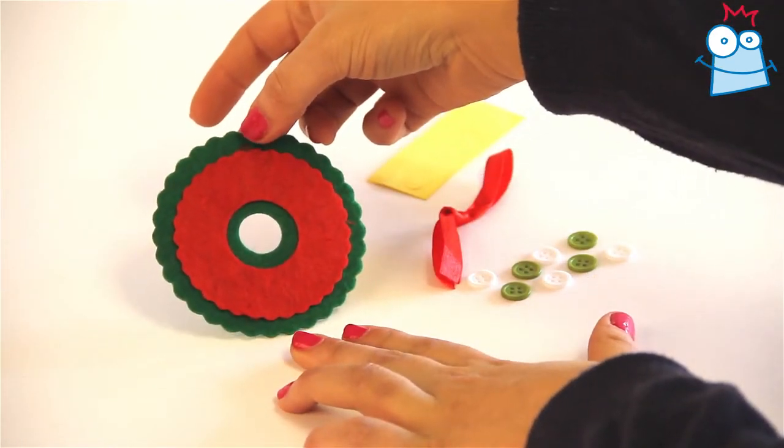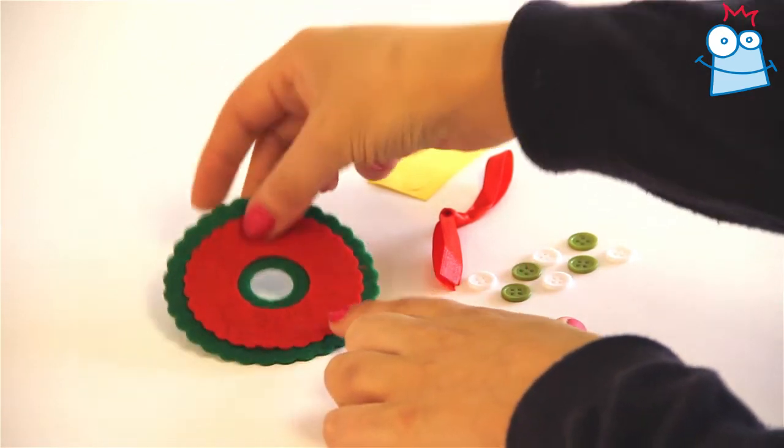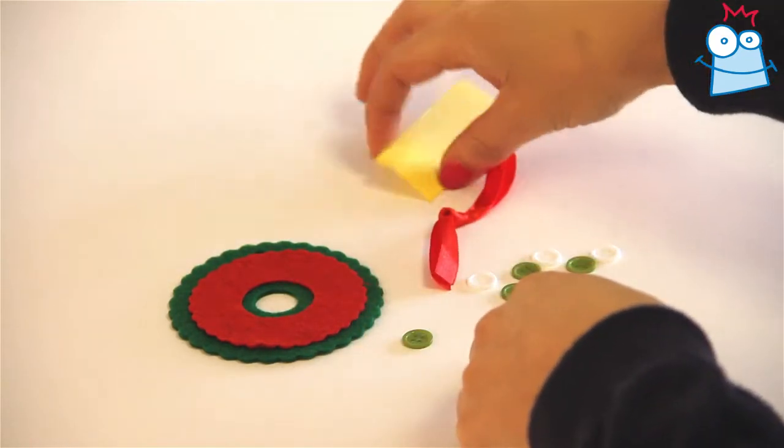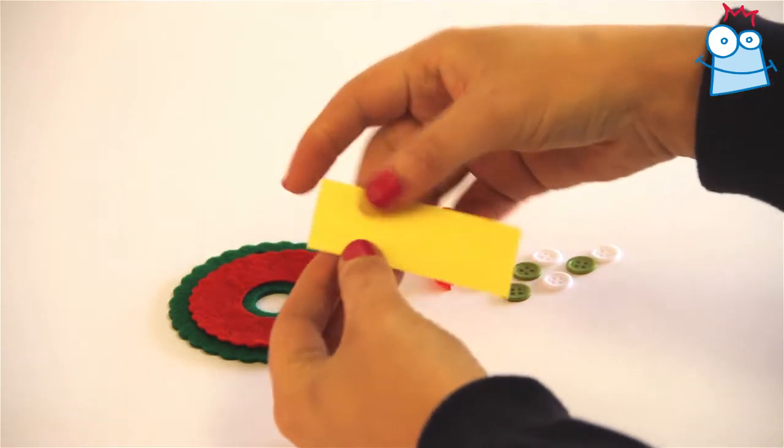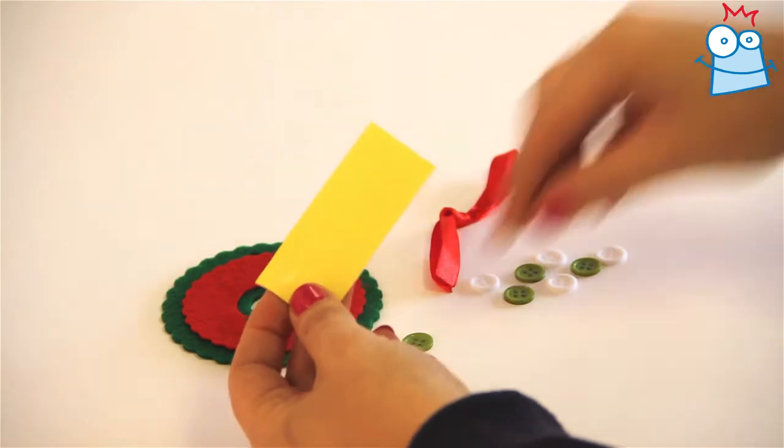Now we're going to decorate the wreath. Before we stick on the buttons, pick up the pad of blue dots, peel off the backing from one, and carefully press a button onto it.